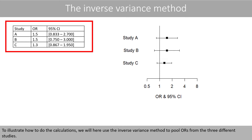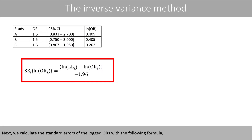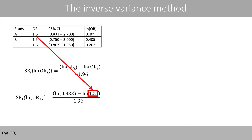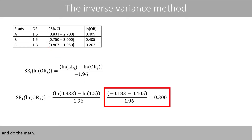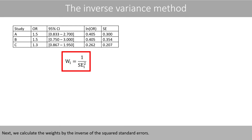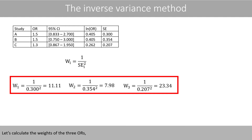To illustrate the calculations, we use the inverse variance method to pool the odds ratios from three different studies. We first calculate the natural log of the odds ratios to get the logged odds ratios. Next, we calculate the standard errors of the logged odds ratios using the formula with the lower limit of the confidence interval and the odds ratio. Then we calculate the weights as the inverse of the squared standard errors. Note that the denominator can also be seen as the variance of the estimated odds ratio, which explains why the method is called inverse variance.